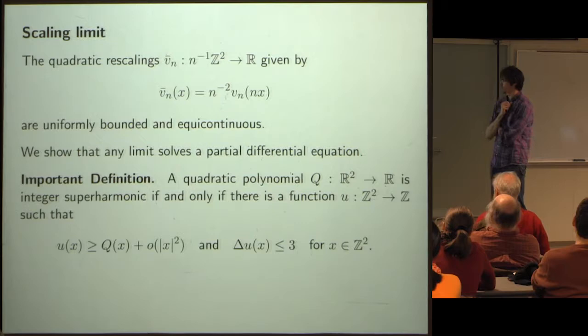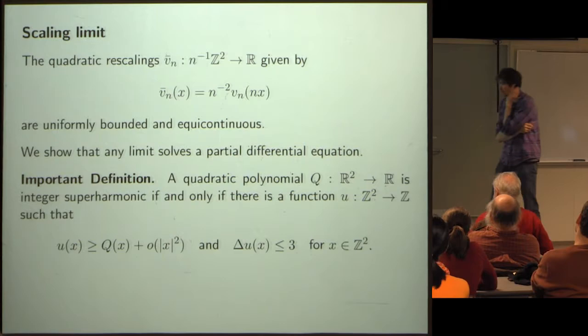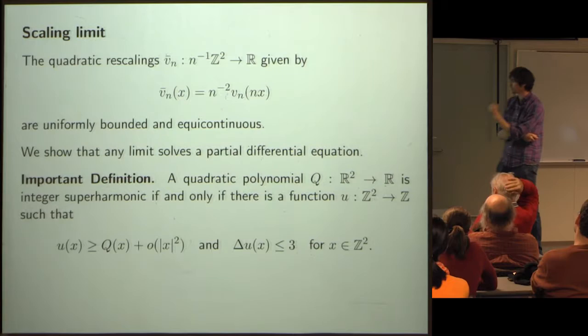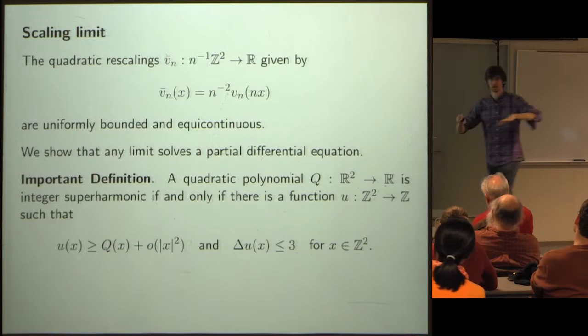The key question is: which quadratic polynomials on R² specify rates of growth that can be achieved by integer-valued functions whose graph Laplacian is less than or equal to three everywhere? I call a quadratic polynomial on R² integer superharmonic if and only if there is some integer-valued function on the lattice which grows like that quadratic polynomial at infinity and has graph Laplacian less than or equal to three everywhere.